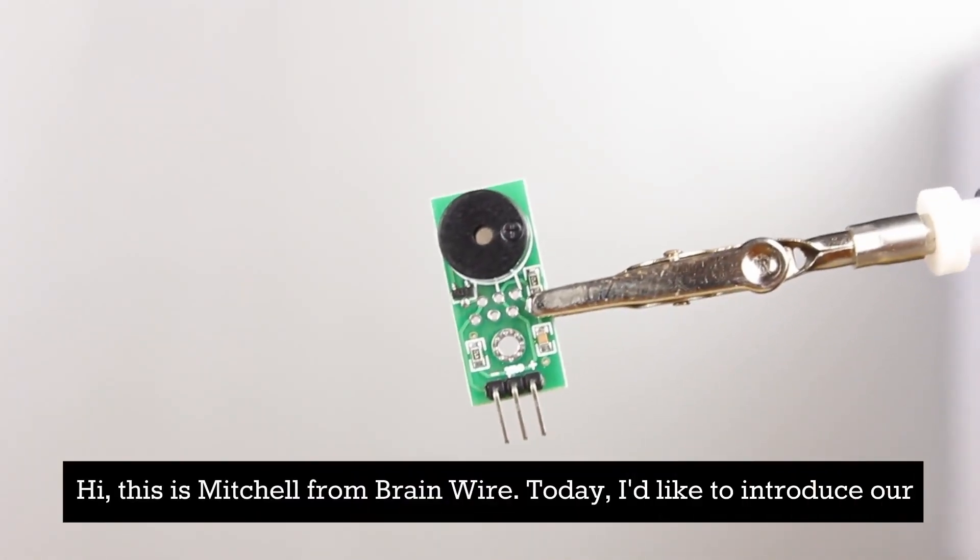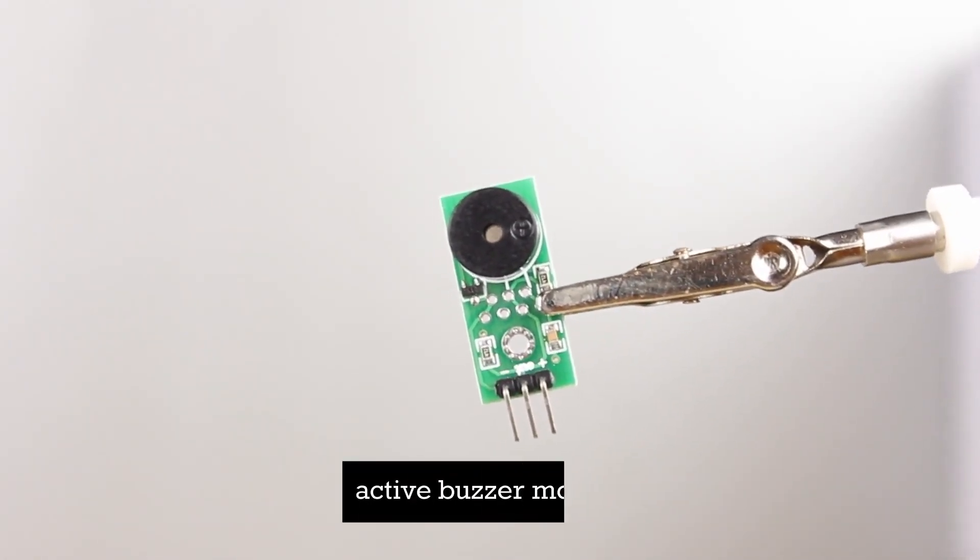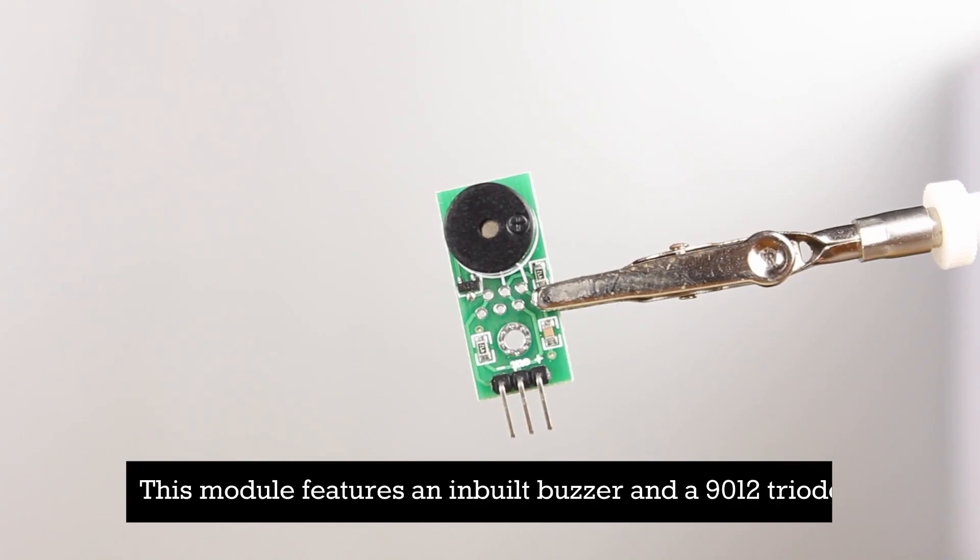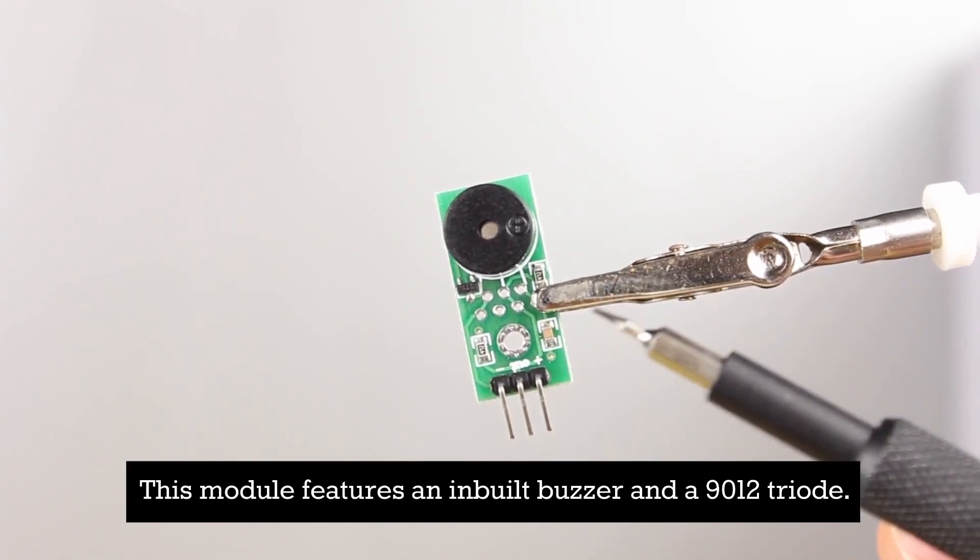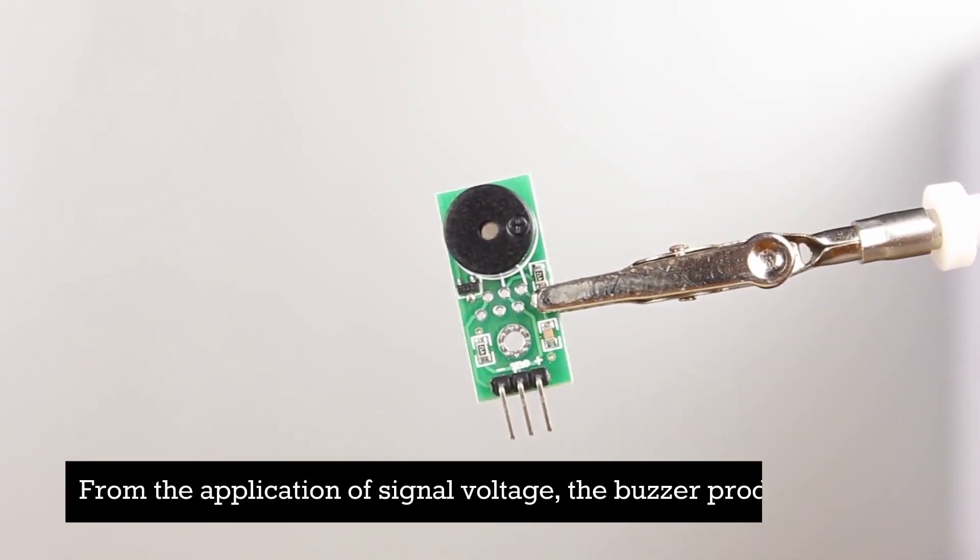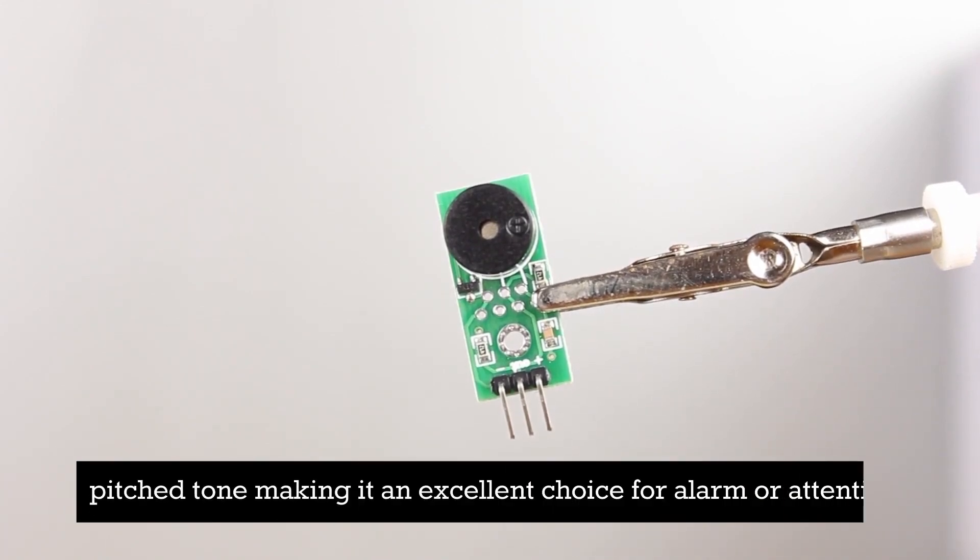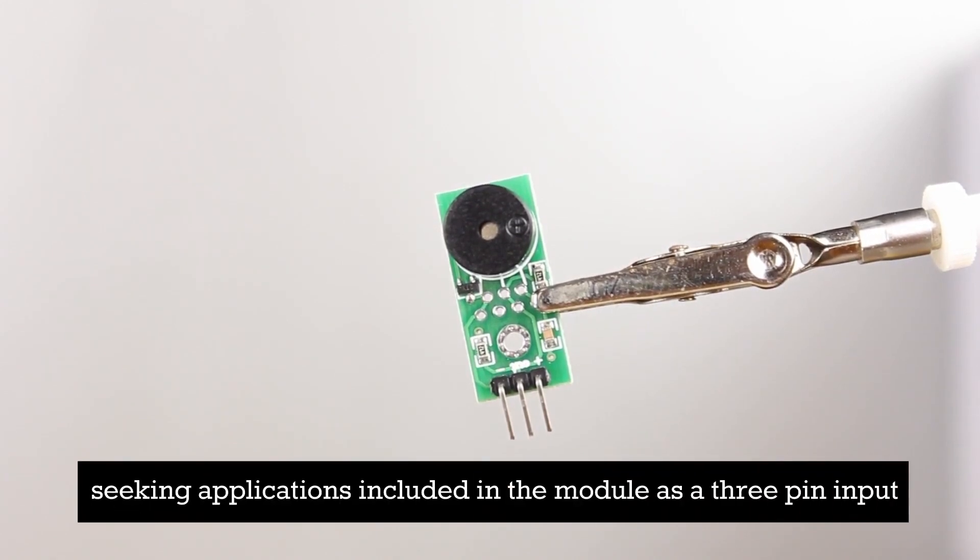Hi, this is Mitchell from BrainWire. Today I'd like to introduce our active buzzer module. This module features an inbuilt buzzer and a 9012 triode. From the application of signal voltage, the buzzer produces a high-pitched tone, making it an excellent choice for alarm or attention-seeking applications.